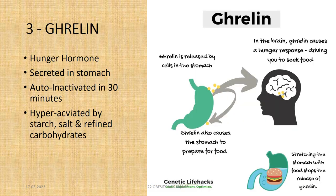The third important hormone is ghrelin, known as the hunger hormone, which is secreted in the stomach. It is auto-inactivated in 30 minutes — if we don't eat anything, the hunger will vanish after 30 to 40 minutes. It is hyper-activated by starch, salt and refined carbohydrates. For reversal of obesity, our aim should be to decrease ghrelin secretion as much as we can.